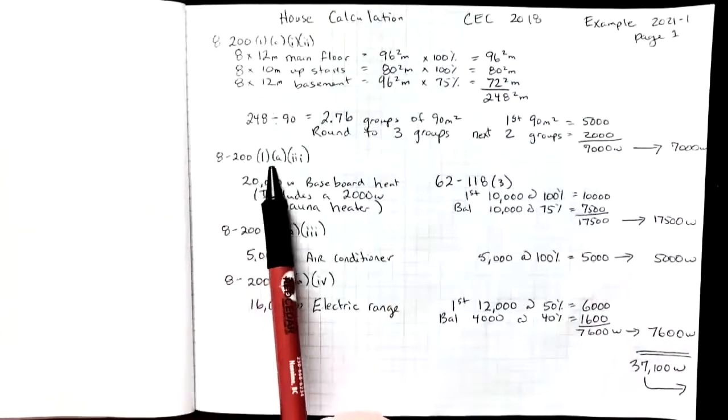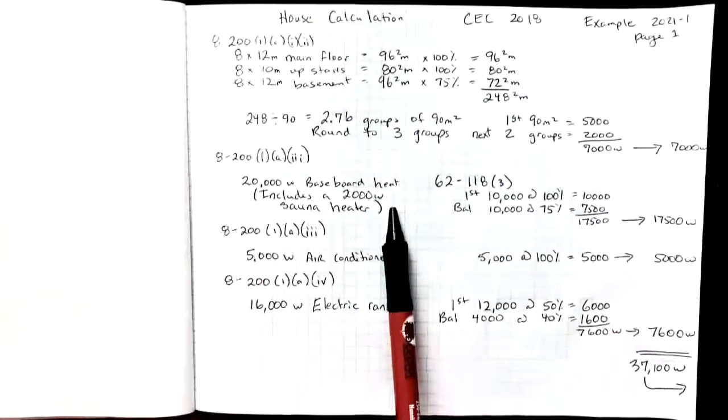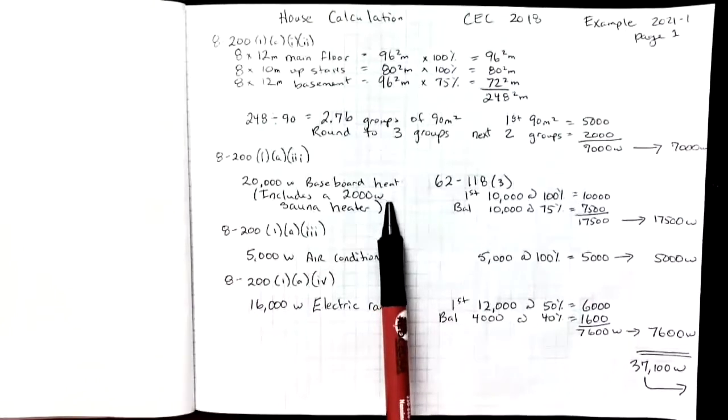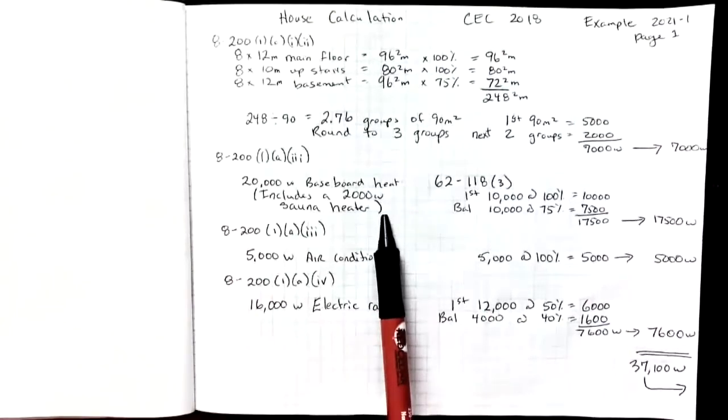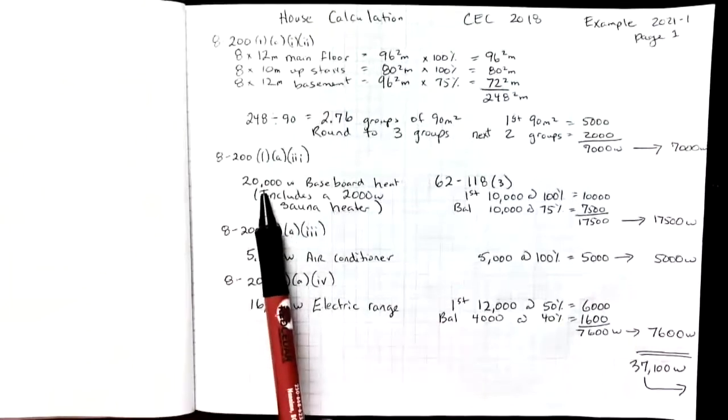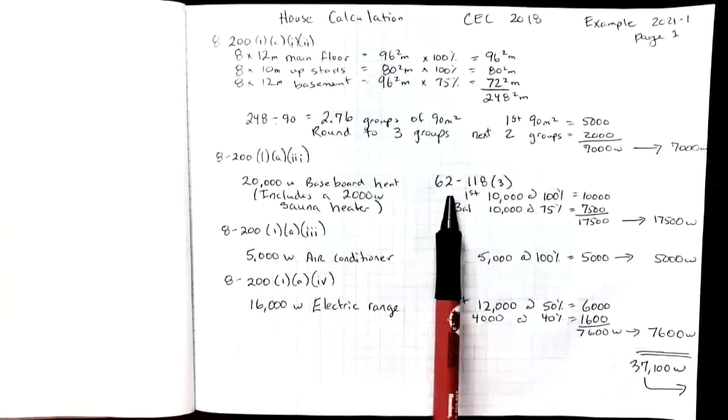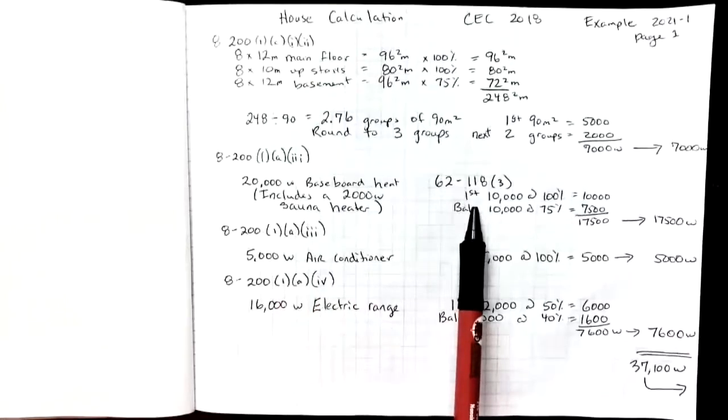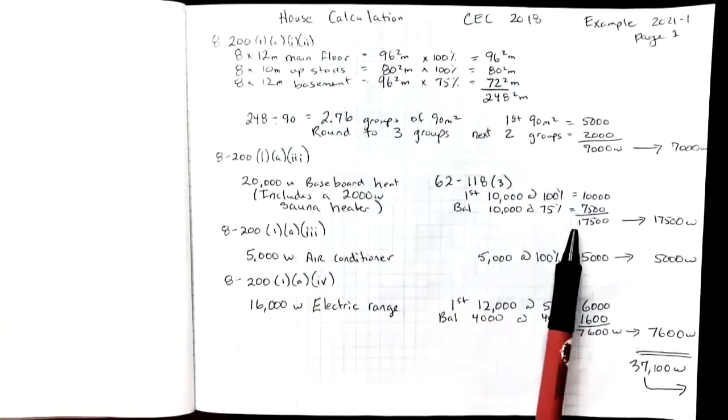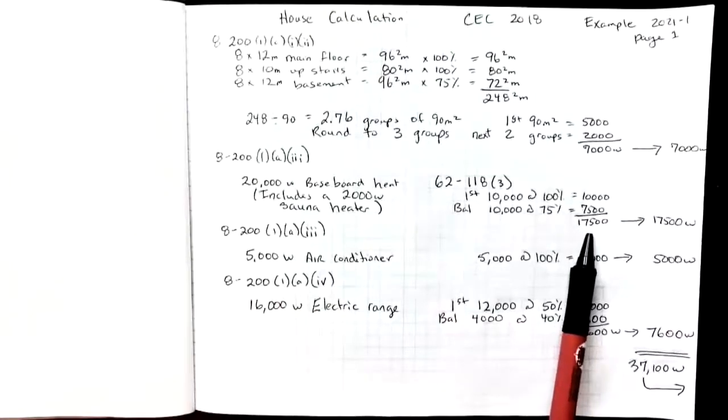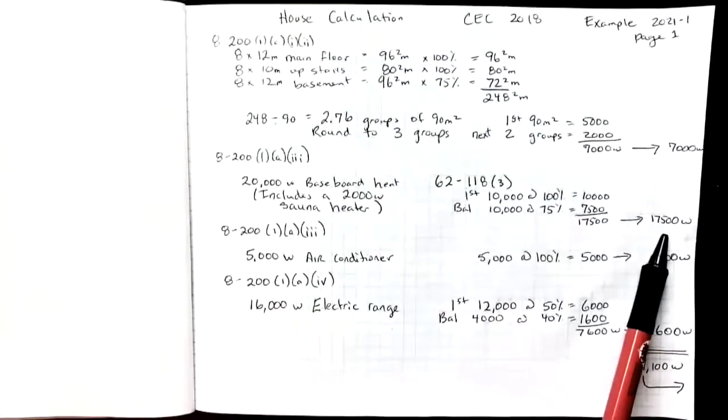Rule 8-200(1)(a) item 3 sends us to rule 62-118(3) for the baseboard heat. Remember that baseboard heat would include a heater in your sauna. In this case I had 20,000 watts total baseboard heat. When I go to 62-118 it tells me to take the first 10,000 at 100% and the balance at 75%. This would leave me with a demand for baseboard heat at 17,500 which I'm going to take towards the main service.